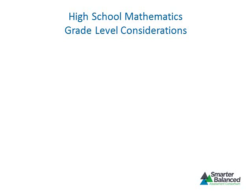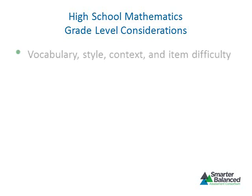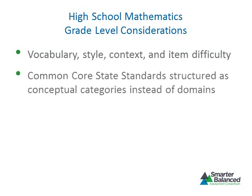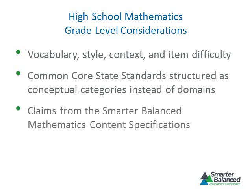This module introduced topics that should be considered when writing and reviewing items and tasks for high school, such as vocabulary, style, context, and item difficulty. This module also described key structural differences in the Common Core State Standards for mathematics between grades 3 through 8 and high school. The Common Core State Standards contain one set of standards for high school that is organized into conceptual categories rather than domains. Finally, the module introduced the claims and the assessment targets for Claim 1 for high school students that are found in the Smarter Balanced mathematics content specifications.